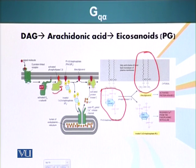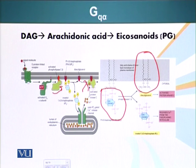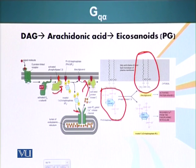Protein kinase C, in order to translocate to the plasma membrane, first has to bind calcium ions. These calcium ions are released from the endoplasmic reticulum when inositol trisphosphate binds ion channels on the ER surface, opening the channel and releasing calcium. The calcium binds protein kinase C, which undergoes a conformational change, moves to the inner surface of the plasma membrane, attaches to DAG, and becomes activated.